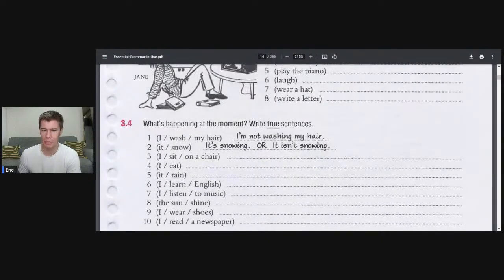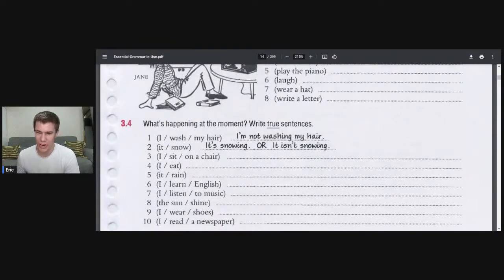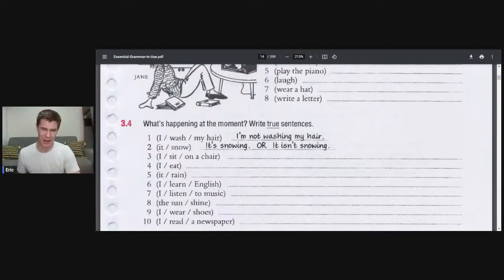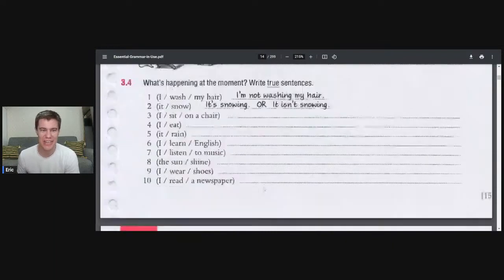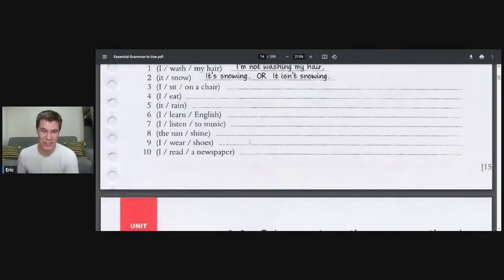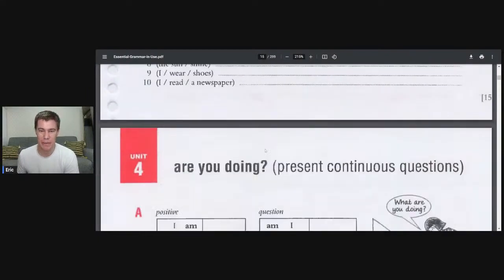Now what's happening at the moment. Write true sentences. I'm not washing my hair right now. It's not snowing, it isn't snowing. I am not sitting on a chair, I'm sitting on the floor. I'm not eating. It is raining at the moment. I am learning English. I'm not listening to music. The sun isn't shining, it's quite late right now, it's evening. I'm not wearing shoes. I'm not reading a newspaper.